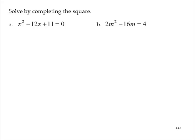Solve by completing the square. x squared minus 12x plus 11 is equal to 0. To solve by completing the square, we'll first rewrite it in the form x squared plus bx. So I'll subtract the 11 from both sides of the equation.